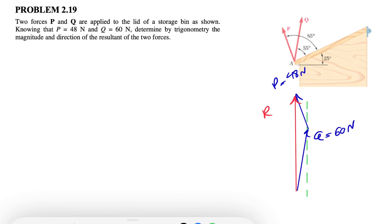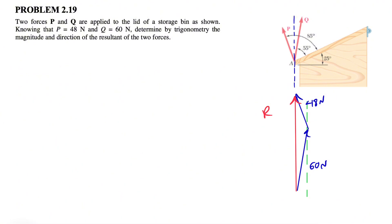First, let's figure out some of these angles. If we draw our vertical line here, we can find them. To find this angle, we know the whole angle is a right angle since this is our horizontal. So 90 minus 55 minus 25 gives us this angle — that's 90 minus 80, which equals 10 degrees. So that angle here is 10 degrees.